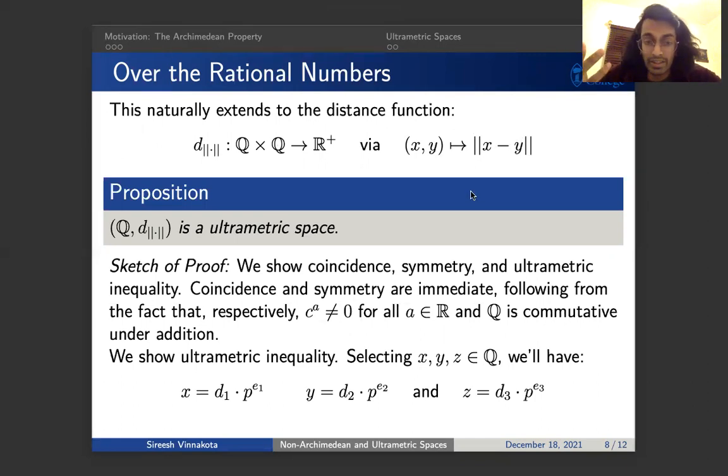So of course, the whole point of defining this is that we want to say that the rational numbers under this metric is actually an ultrametric space. And so we can say that we do need to check coincidence, symmetry, and the ultrametric inequality. We can leave coincidence and symmetry as maybe an exercise and say that the ultrametric inequality is maybe the more important, interesting part of this proof.